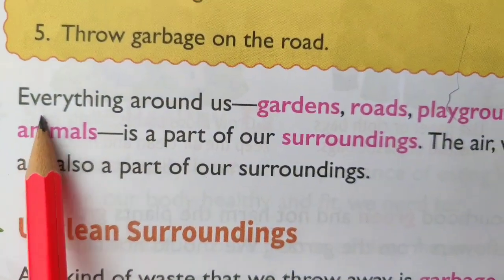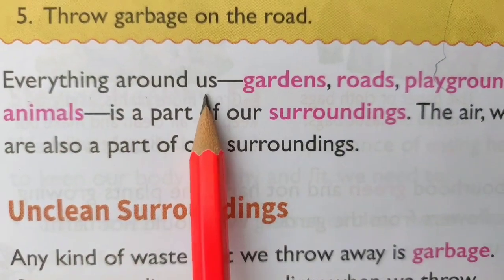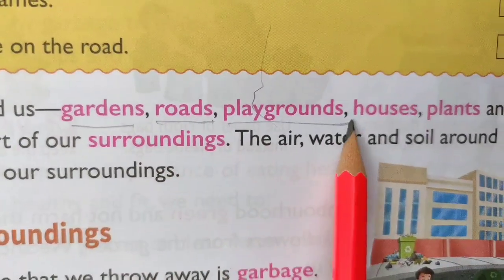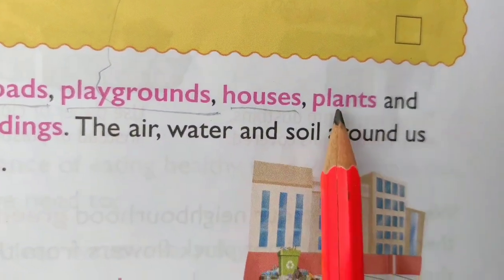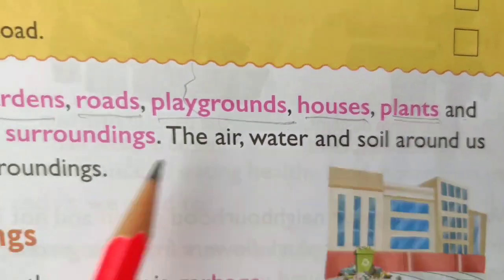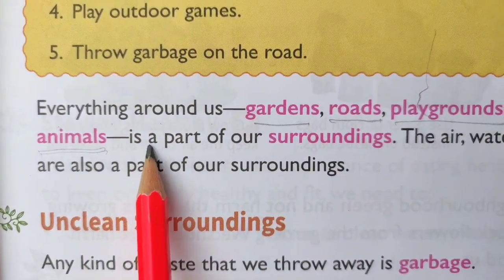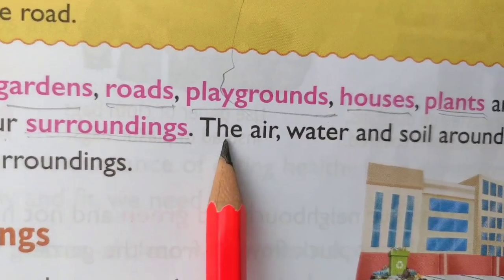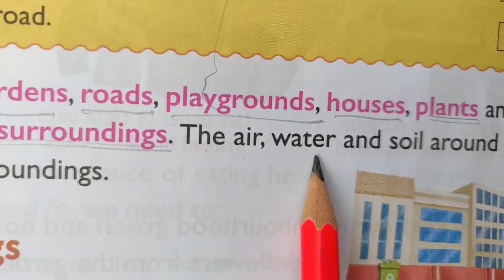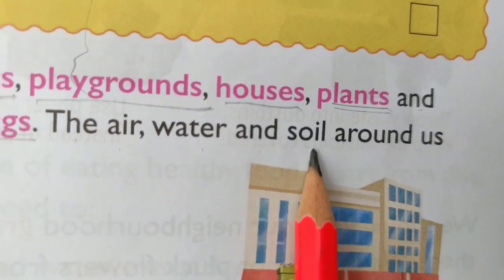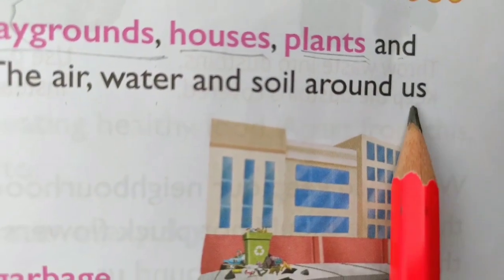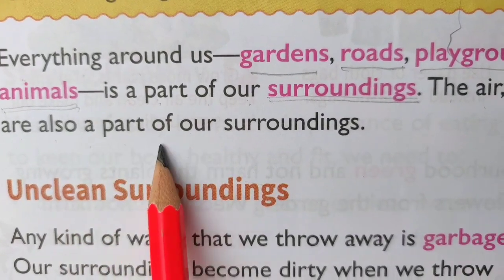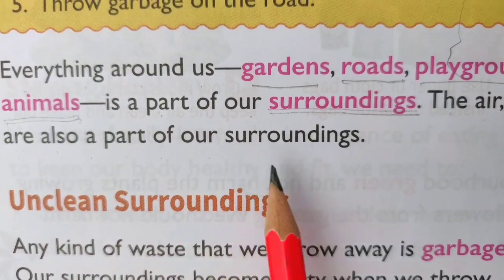Everything around us — gardens, roads, playgrounds, houses, plants and animals — is a part of our surroundings. The air, water and soil around us are also a part of our surroundings.